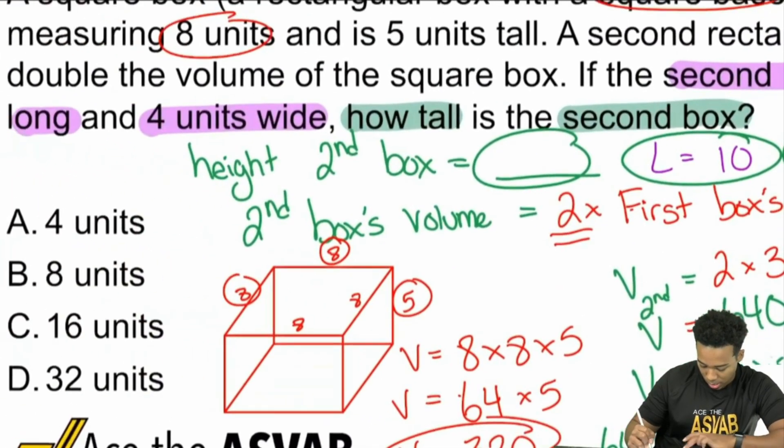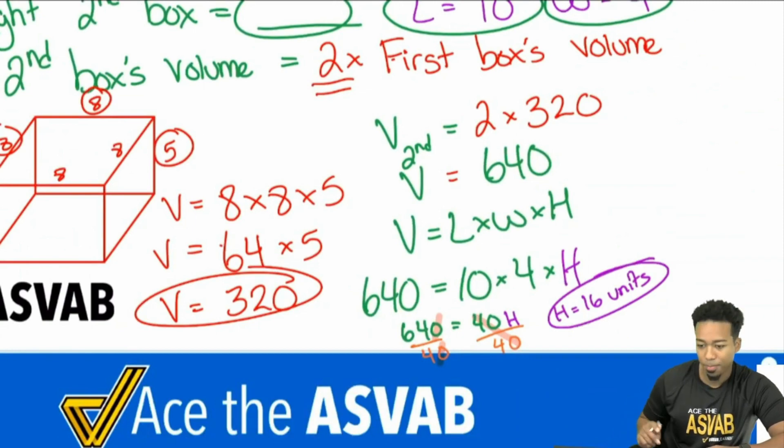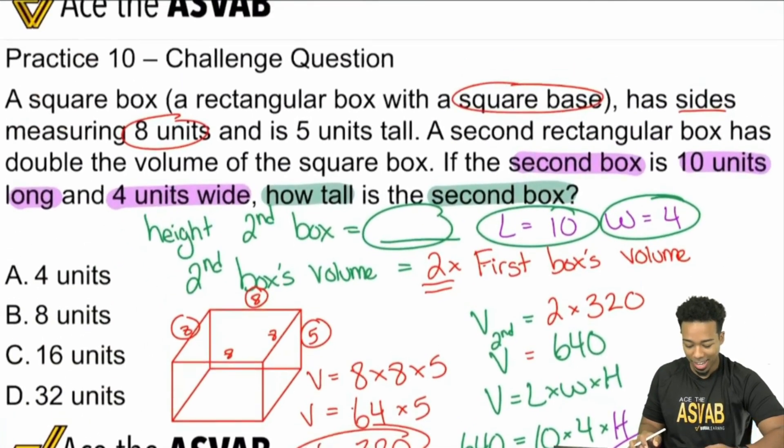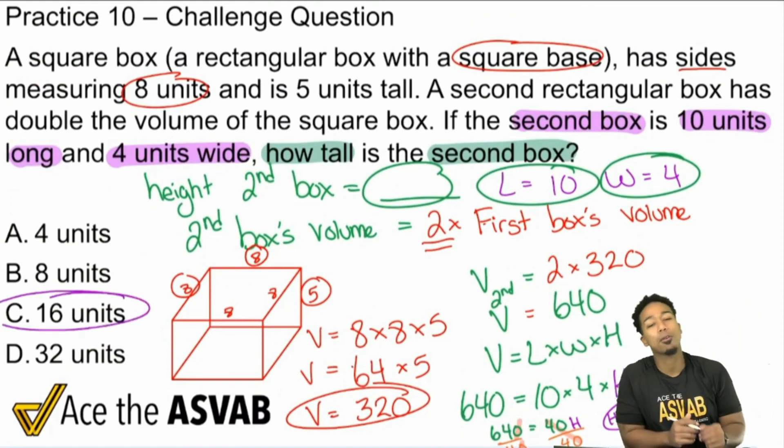Right there. Booyah. And that is how you tackle this challenge question. The answer will be C, 16 units. I hope this makes sense, my party people. Again, if you have any questions at all about how to raise your score, how to work this problem out, I got your back.